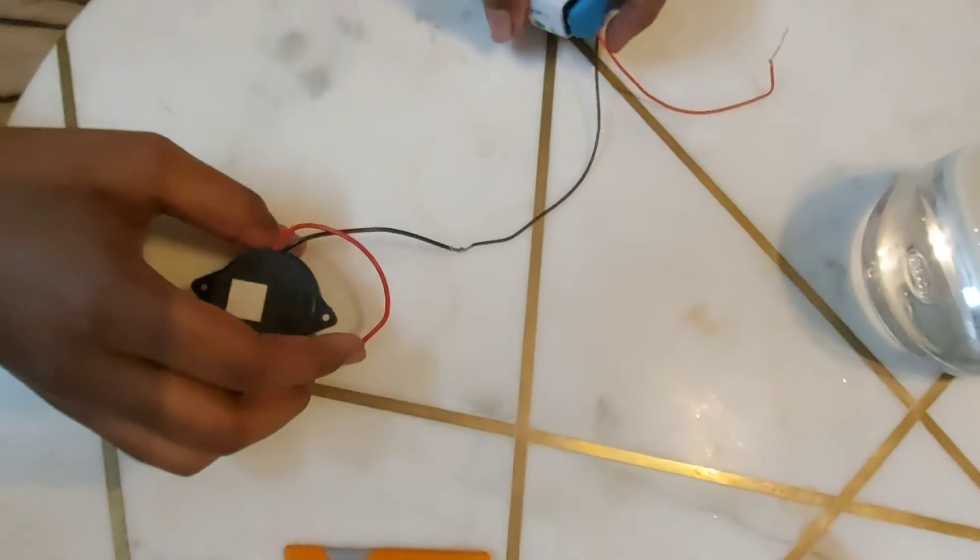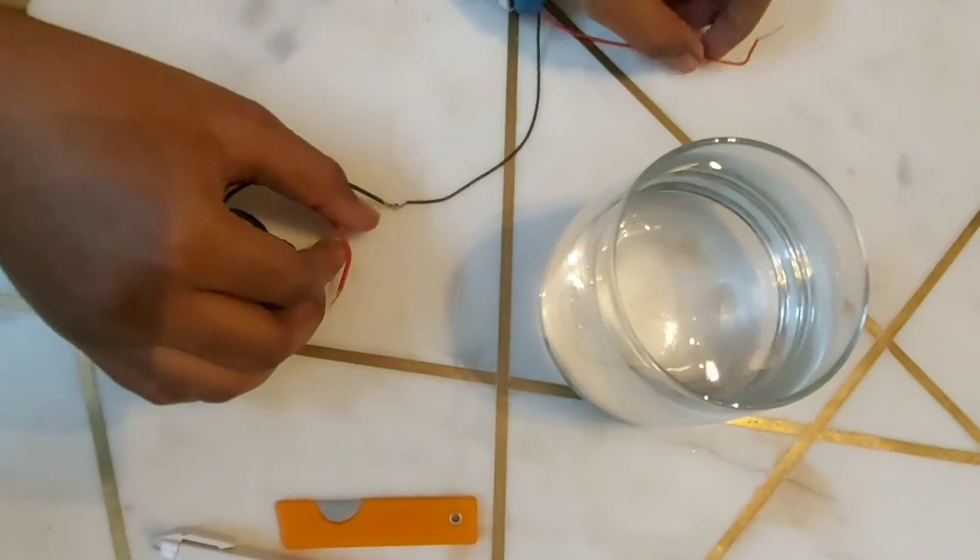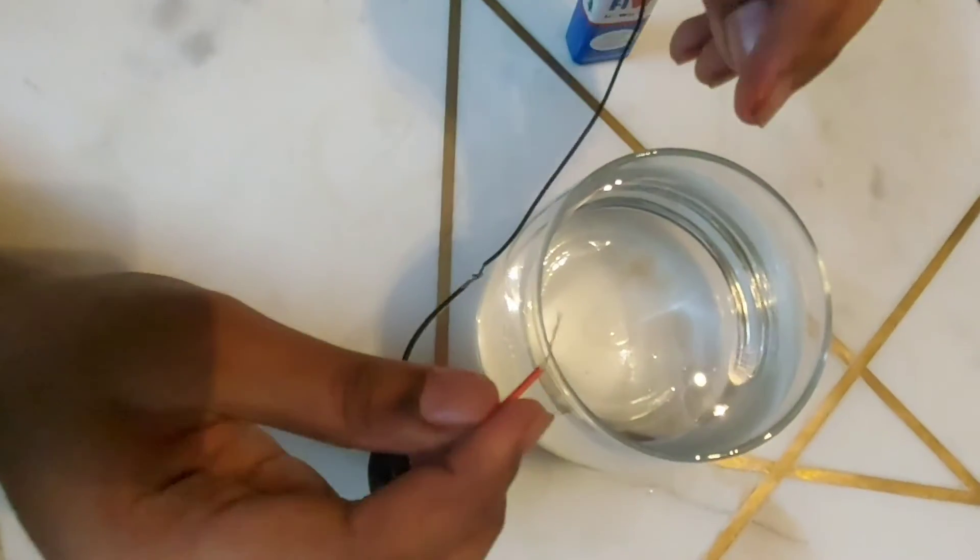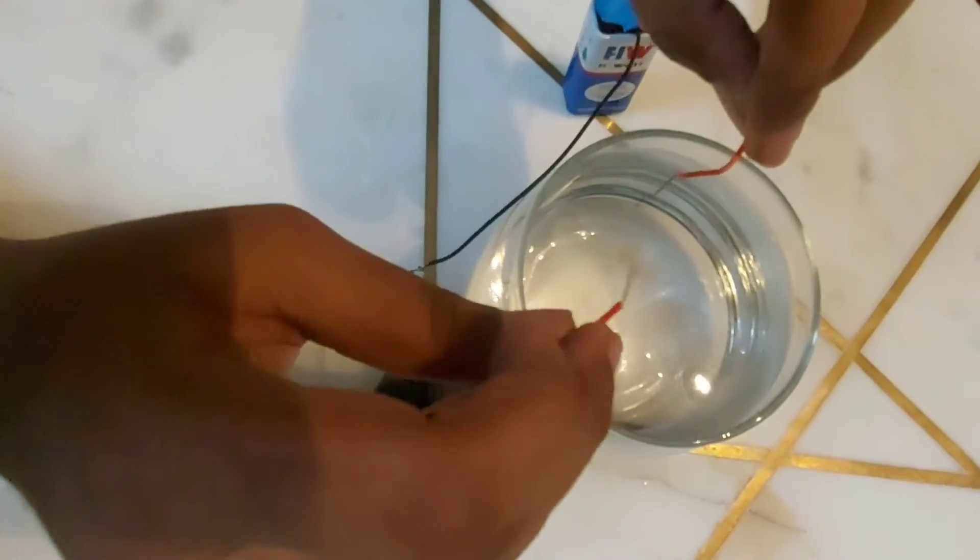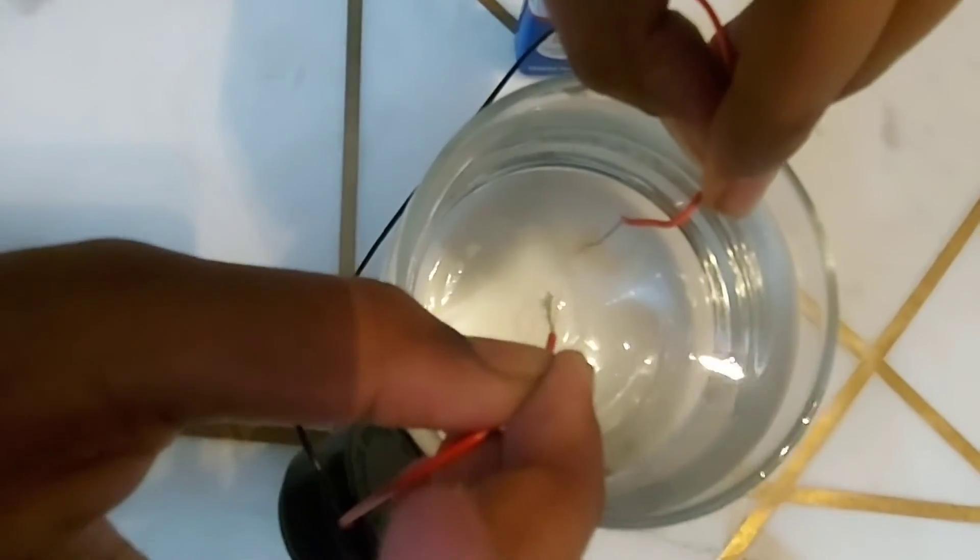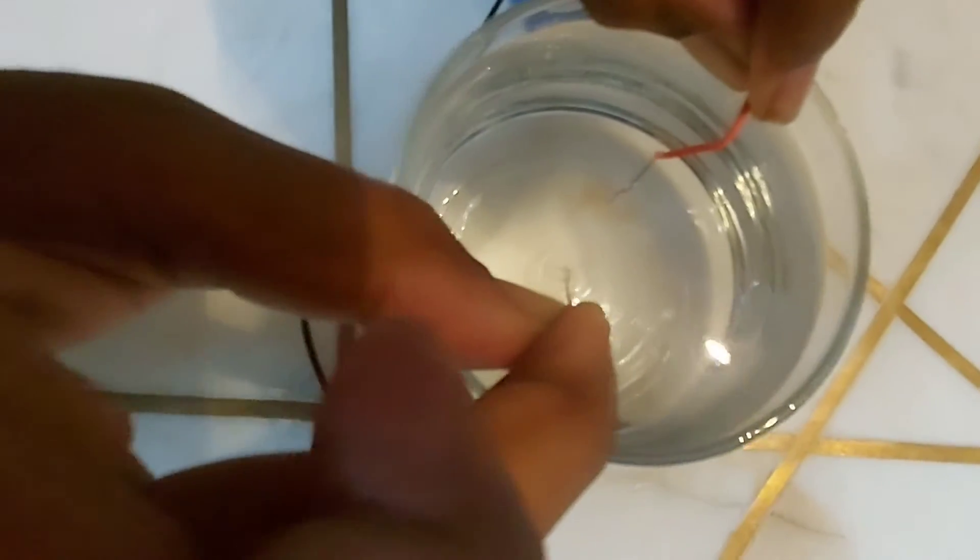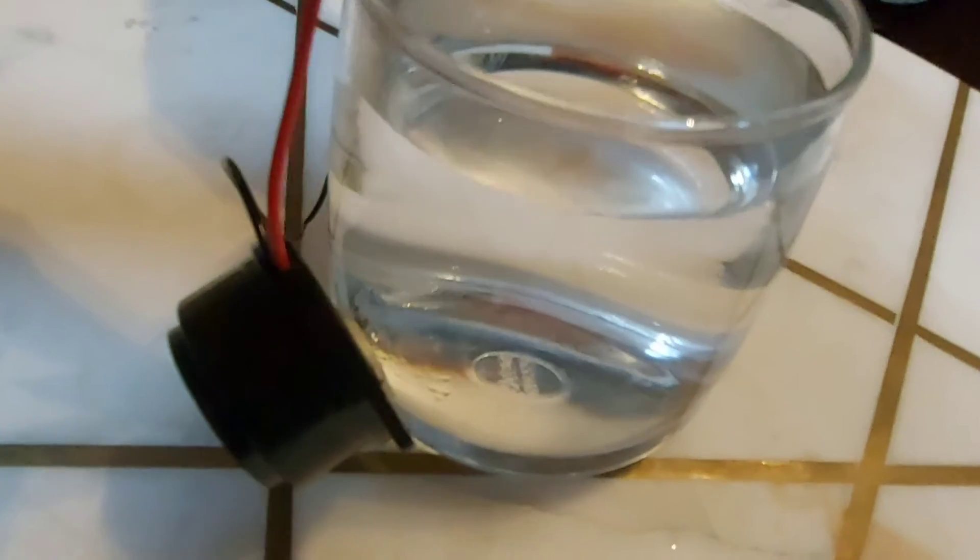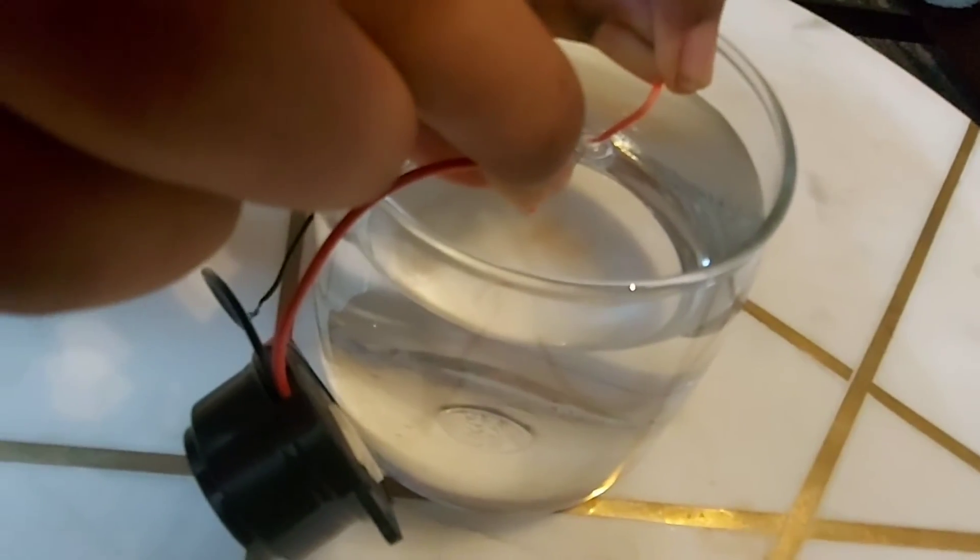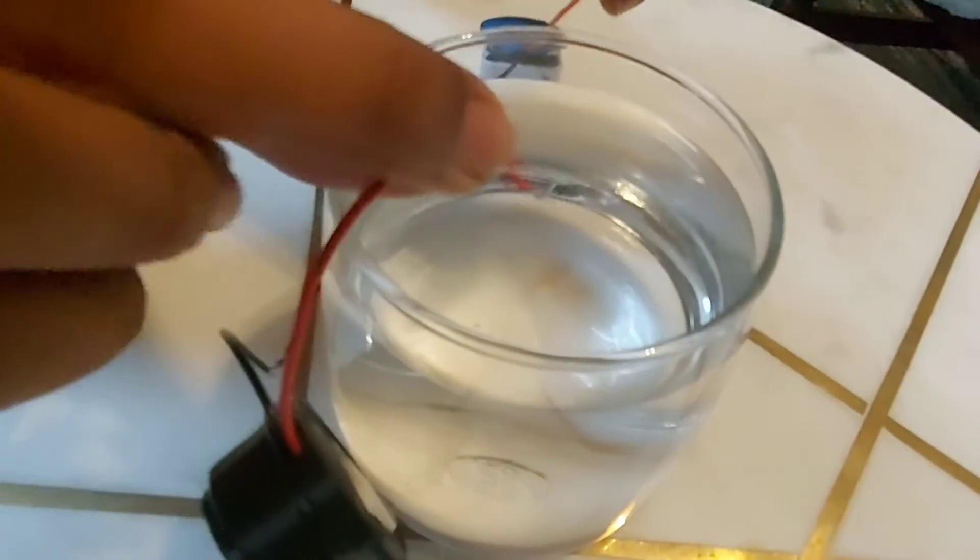That's it. Now we take this glass of water. Take the two red ends and leave them inside the water. When you leave it inside, the buzzer produces sound. Can you hear the sound of the buzzer? So this is the sound of the buzzer.